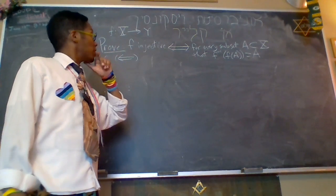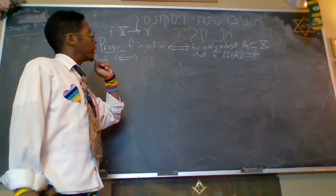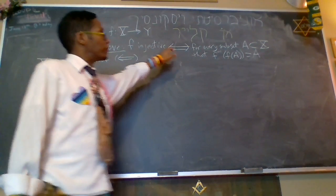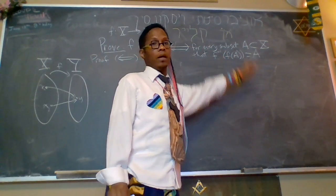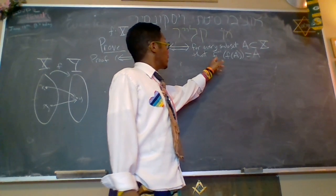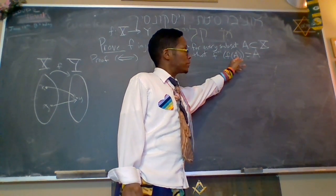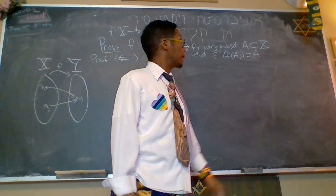Recall now that we have a function f from set X to set Y. We want to prove this set theory result that if f is injective, f is injective if and only if for every subset A of the domain,